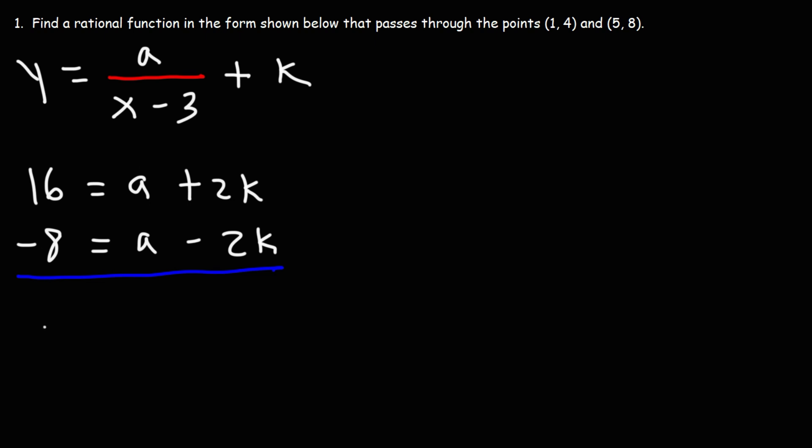Now let's add the two equations. Positive 16 plus negative 8 is positive 8. a plus a is 2a. 2k plus negative 2k, they will cancel to zero. So now we have 8 equals 2a. So let's divide both sides by 2. 8 divided by 2 is 4. So we have a equals 4.